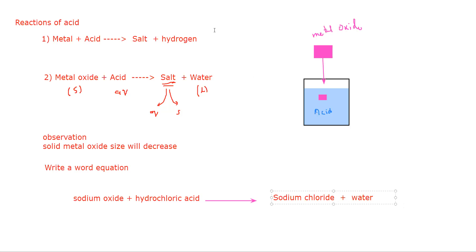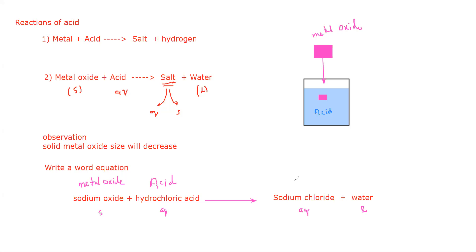For the word equation, state symbols are not necessary but you can mention them. Sodium oxide is solid, hydrochloric acid is aqueous, sodium chloride — most chlorides are soluble except silver, mercury and lead — so sodium chloride will be aqueous. Water is in a liquid state. So whenever metal oxide plus acid gives salt plus water.